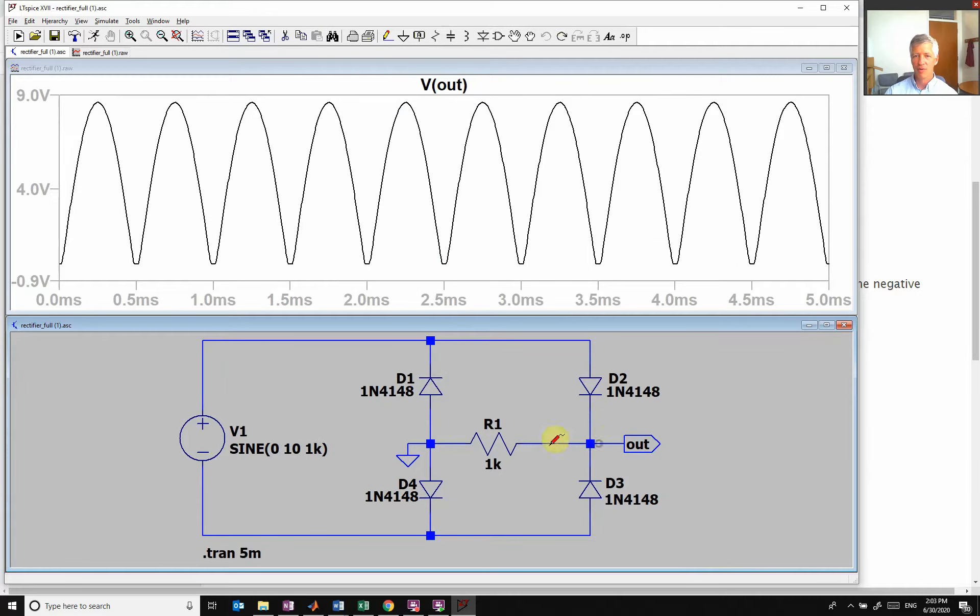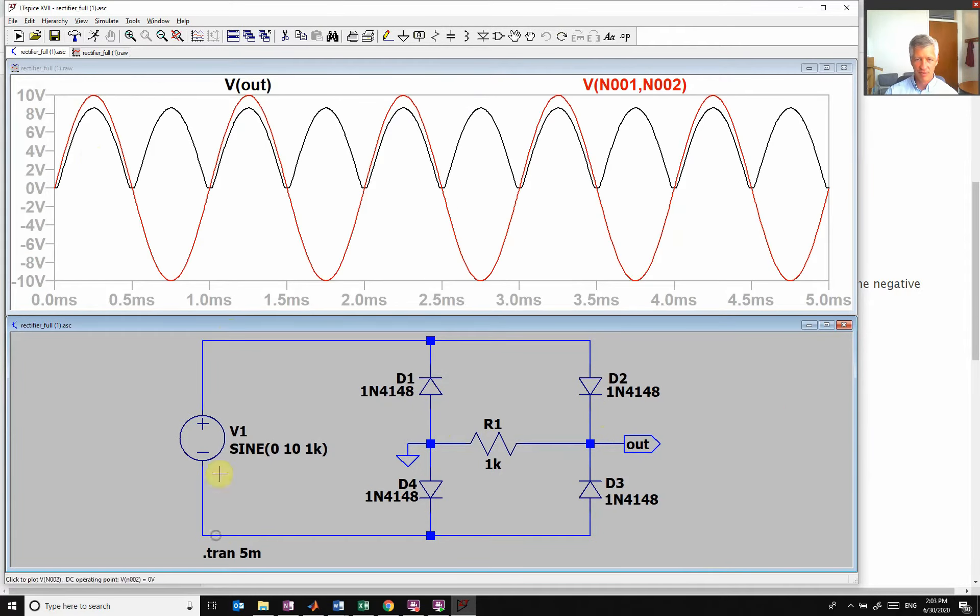So if I look at my output voltage here, compared to this input voltage, you see when this one goes up, it goes up. But then when it's going to go down, it flips it around and goes the opposite way through the resistor. And so you see I get this ripple for both the positive and the negative.